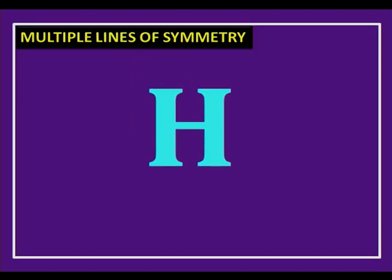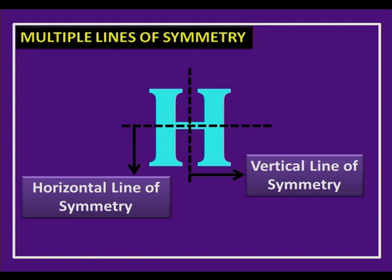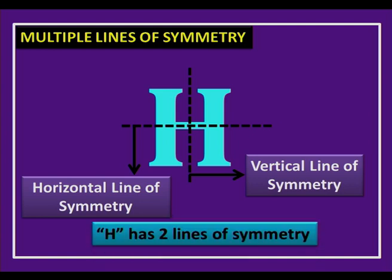Let us check whether alphabet H has multiple lines of symmetry. Drawing a horizontal line and folding — yes, it coincides. Drawing a vertical line and folding — it also coincides. So H has two lines of symmetry: one vertical and one horizontal. Even alphabets can have more than one line of symmetry.